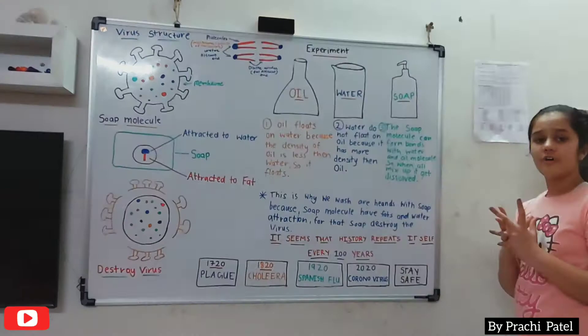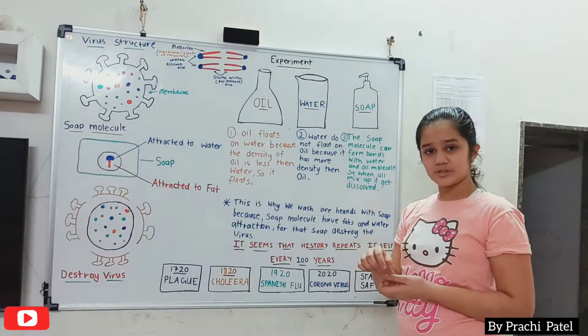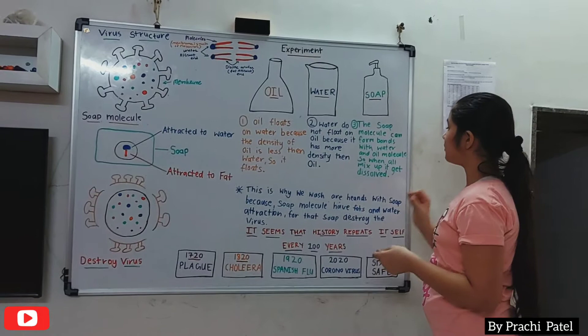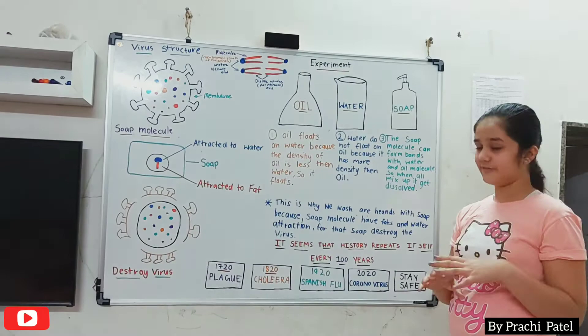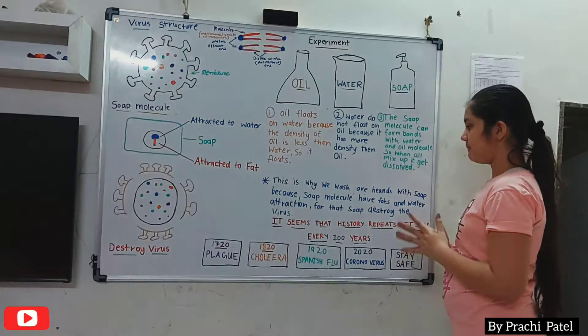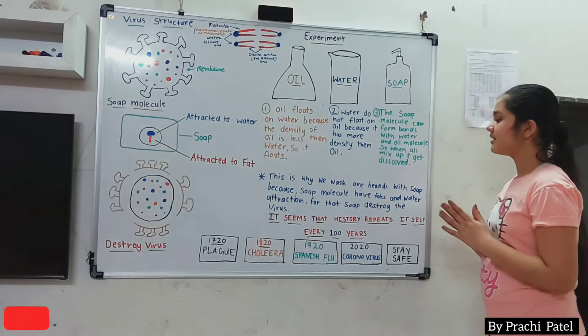Now let's see one experiment. Take a glass of water and add some oil in it — you will see that the oil floats on top of the water. Now add some soap and mix it. The soap molecules can form bonds with both water and oil molecules, so the oil gets dissolved. This is why when we wash our hands with soap, the molecules' fat and water attraction causes the soap to destroy the virus.